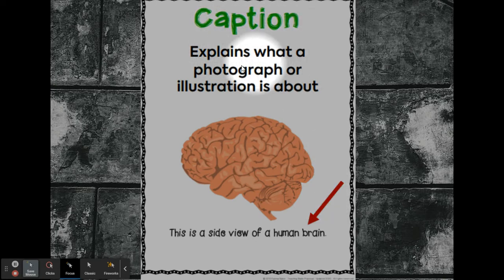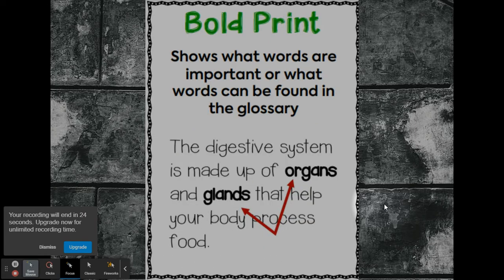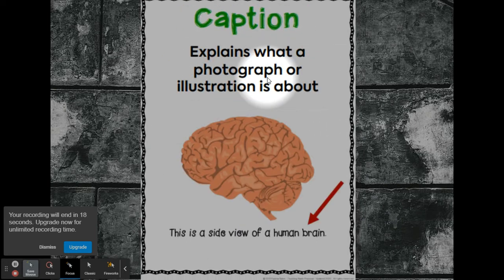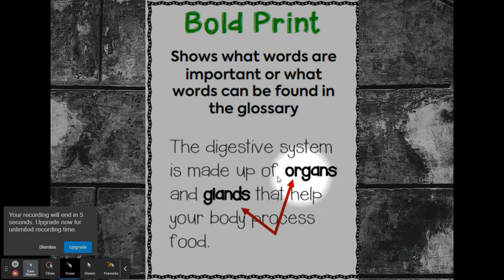A caption explains what a photograph or illustration is about — it tells more information about the picture. For example, 'This is a side view of a human brain.' Bold print shows what words are important or what words can be found in the glossary. The bold words are going to be thicker and darker.